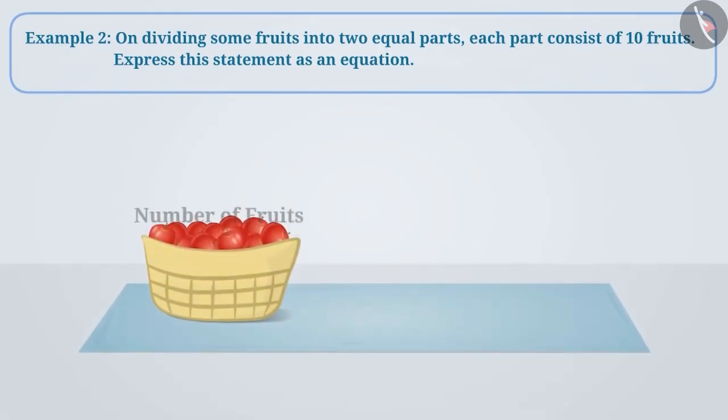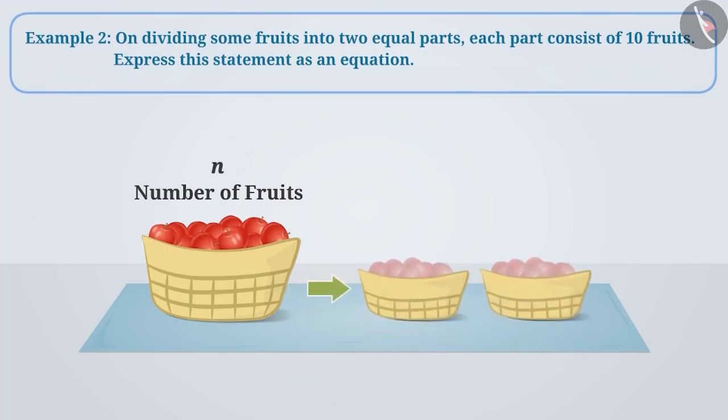Here, we do not know the number of fruits. Let us represent it with the variable n. We have to make two equal parts of n fruits. Thus, we have to divide n fruits by 2.